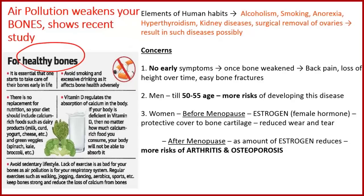The article talks about the need for healthy bones. Vitamin D is a very important nutrient required for the human body; it regulates the absorption of calcium, which is necessary to maintain healthy bones. Calcium-rich foods in our daily routine include milk, curd, yogurt, cheese, and green vegetables like spinach.